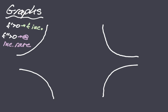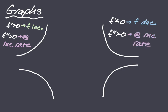For the next graph, f prime is less than zero because visually this function is decreasing — f is decreasing, f prime is less than zero. Now we look at concavity to decide increasing or decreasing rate. This curve is concave up, which means f double prime is greater than zero, so f prime is increasing. We'll say 'at an increasing rate.' When a curve is decreasing but concave up, we say it is decreasing at an increasing rate.